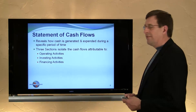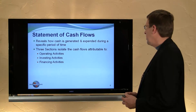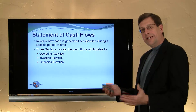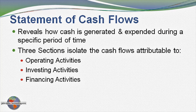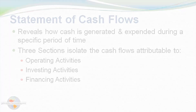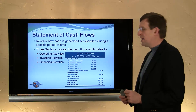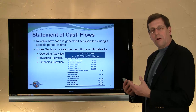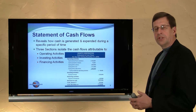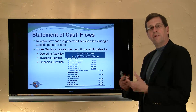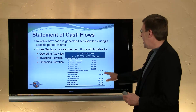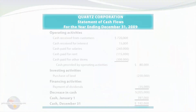The fourth financial statement is the statement of cash flows. It's a bit more complex initially. It shows how cash is generated and expended during a period of time, which is not the same thing as income. The statement of cash flows has three key sections: the operating activity section, the investing activity section, and the financing activity section. In the operating section, we show cash received from customers and cash paid for expenses like salaries and rent. This business generated $80,000 net cash from operating activities — not exactly the same as net income, because revenues and expenses are recognized when they occur, independent of when cash actually flows.